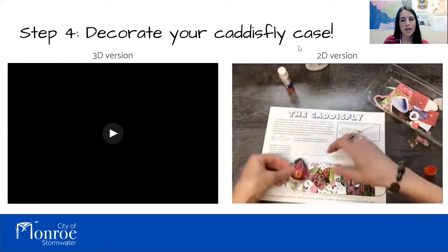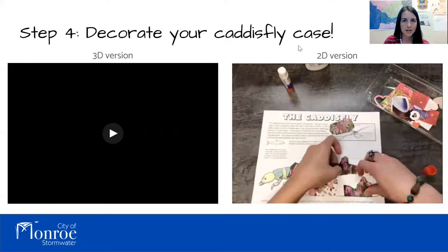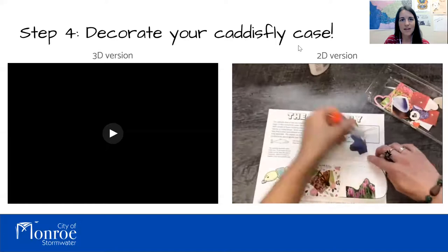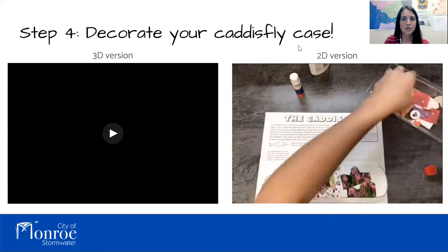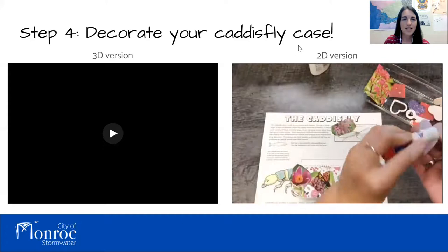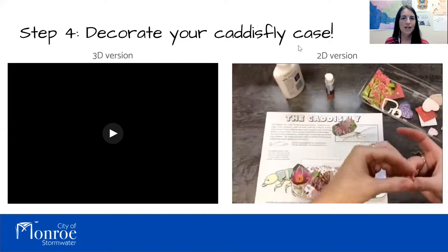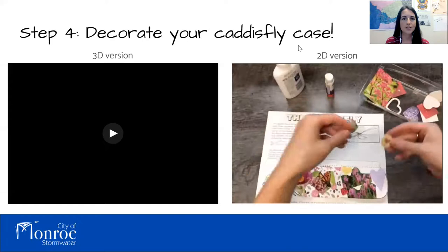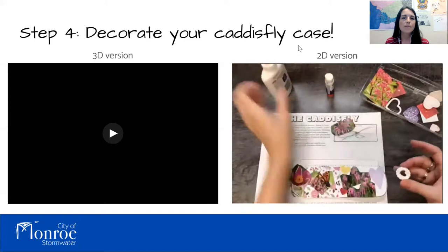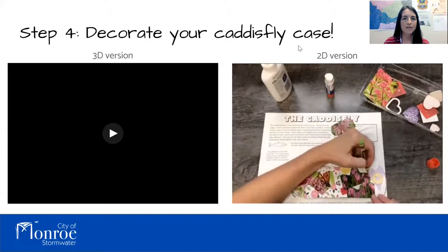Caddisfly larvae live in streams for one to two years. When it's time, they seal themselves into their case, they pupate, and then once they've transformed, they crawl out as a winged adult. The reason I chose this craft today is because caddisfly larvae are bioindicators — that means they can help us indicate whether the stream is healthy depending on if they're thriving there. The casemaking caddisfly larvae, as well as mayfly and stonefly nymphs, are sensitive to pollution and they like high levels of oxygen dissolved in the water. Other kinds of organisms, like midge fly and black fly larvae, are pollution tolerant, which means they can survive in a wider range of water quality.